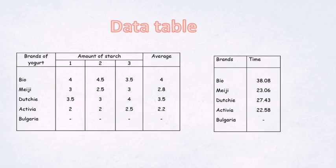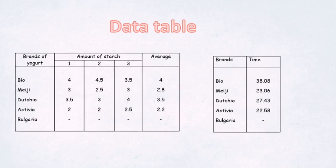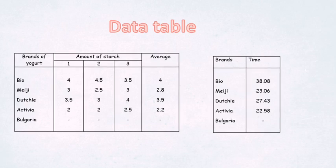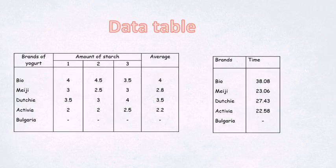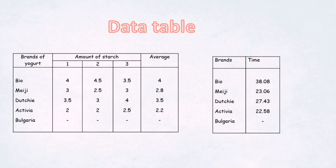Dachi: first time has starch 3.5 grams, second 3 grams, third 4 grams. Activia: first time has starch 2 grams, second 2 grams, third 2.5 grams. Average: Bio has starch 4 grams, Meiji has starch 2.5 grams.